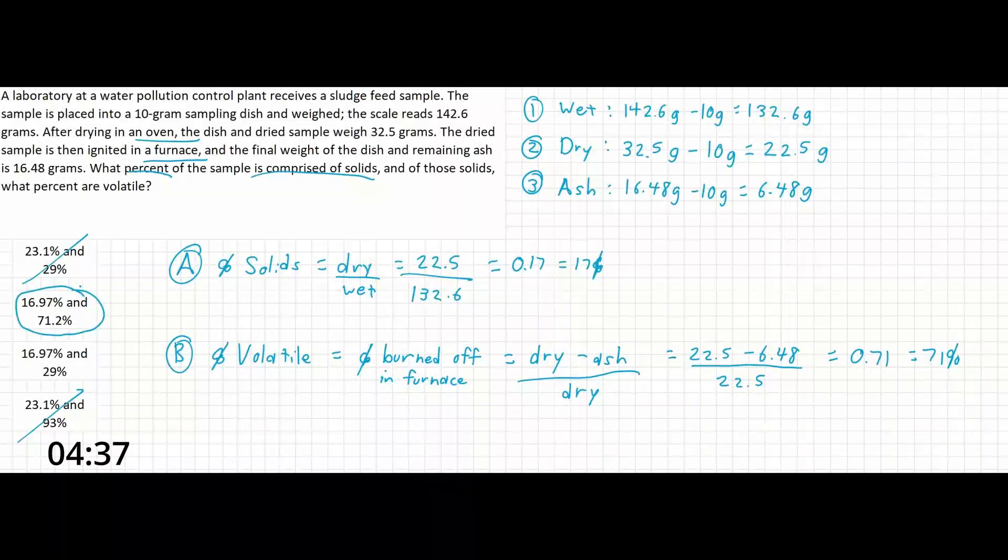So this problem is very simple if you can pull out the relevant information you need for this problem and not get tripped up and accidentally calculate the wrong thing. For example, if you calculated A correctly, but then calculated for the non-volatile in B, you could end up with the third answer here.